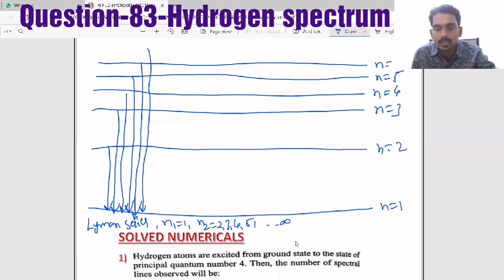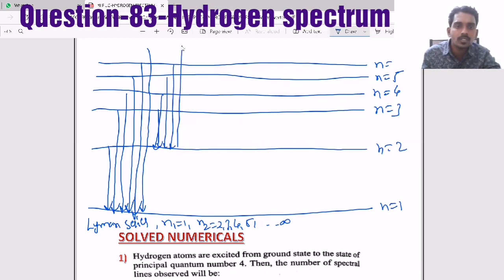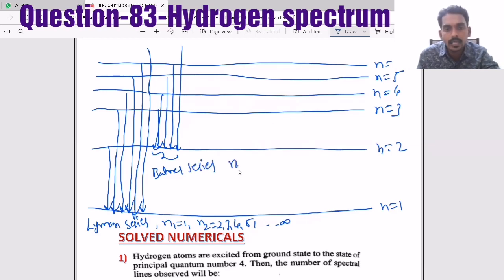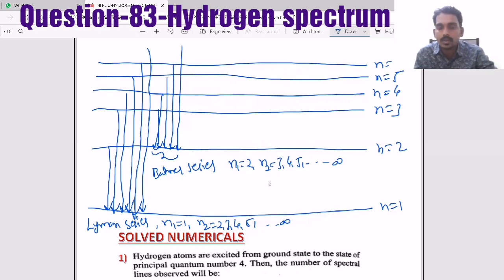Minimum wavelength corresponds to N2 equal to infinity and maximum wavelength corresponds to N2 equal to 2. Similarly, when the electron jumps to the first excited state from any higher energy level, all those spectral lines come under the Balmer series, where N1 is 2 and N2 can be 3, 4, 5, and so on up to infinity. For every series, infinity is the series limit corresponding to minimum wavelength, and the minimum N2 corresponds to maximum wavelength.